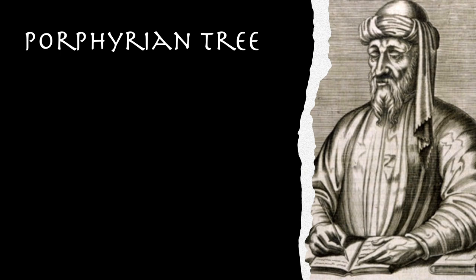Aristotle's discussion of the predicables in chapter three of the Categories is extremely brief. Nevertheless, the study of the predicables was significantly developed by the later Greek philosopher Porphyry, a famous commenter on Aristotle and Plato, who lived from around 233 to 305 AD. Because of Porphyry's work in studying the predicables, the idea of a Porphyrian tree is attributed to him.